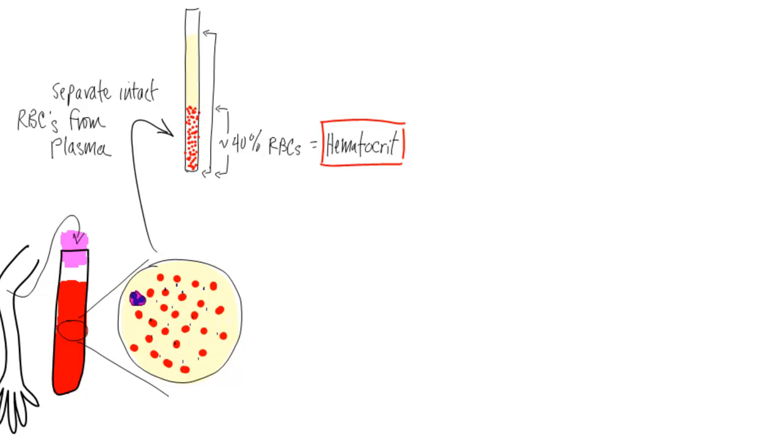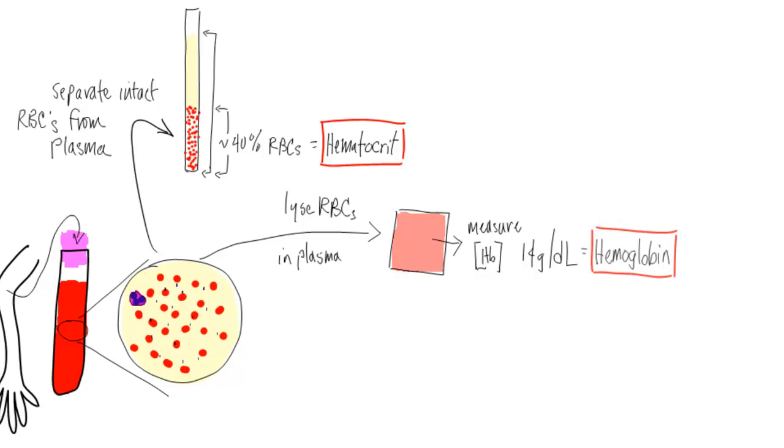The second test asks how much hemoglobin, the main functional protein of red cells, is present in the blood sample. First, you need to lyse the red cells, then measure the hemoglobin concentration. This test is called the hemoglobin, and the normal values are typically around 14 grams per deciliter.